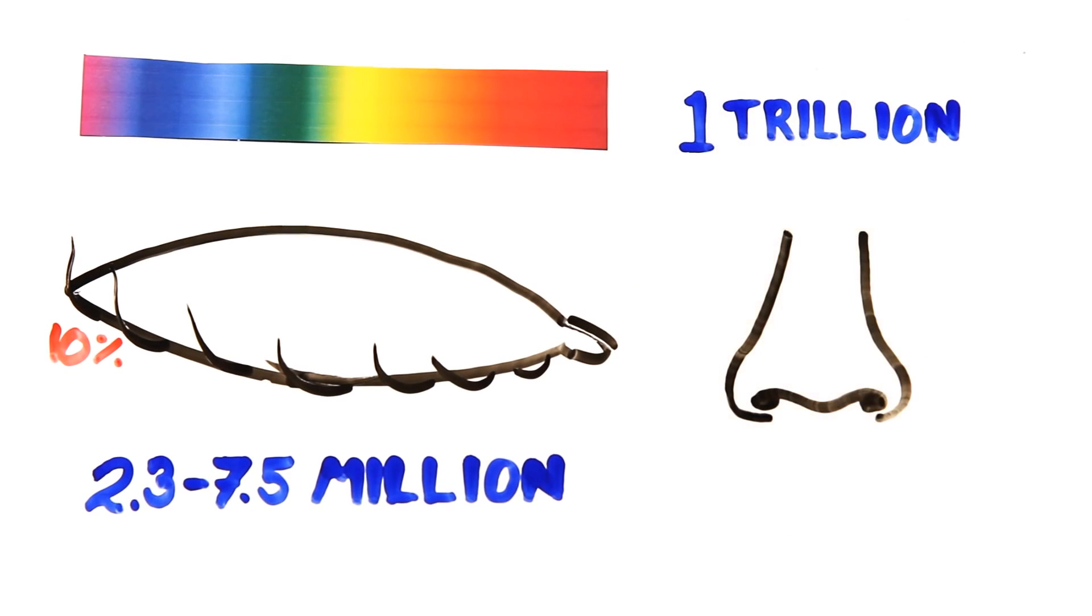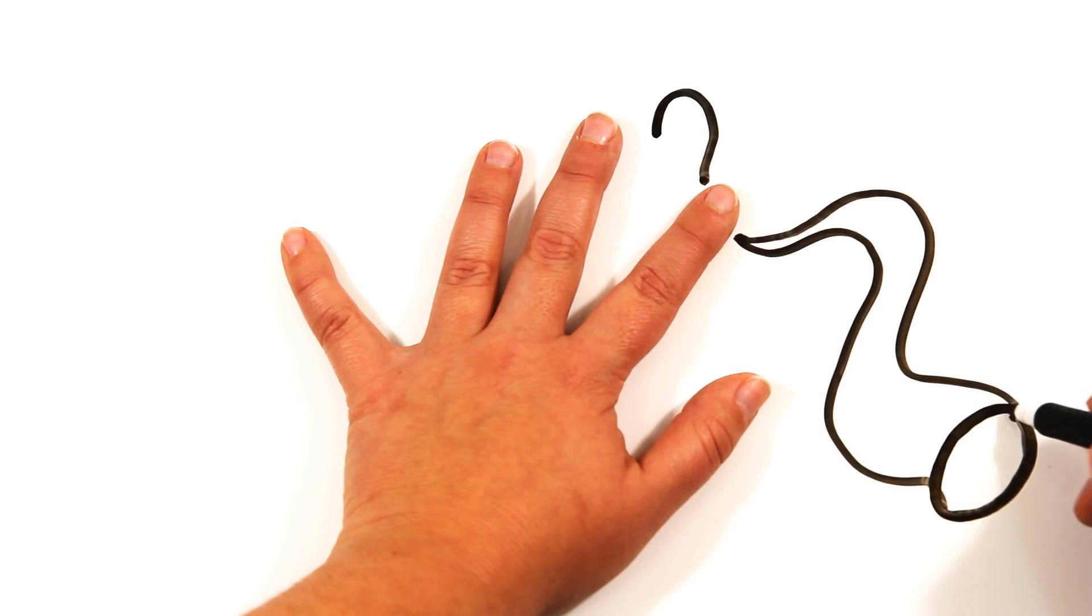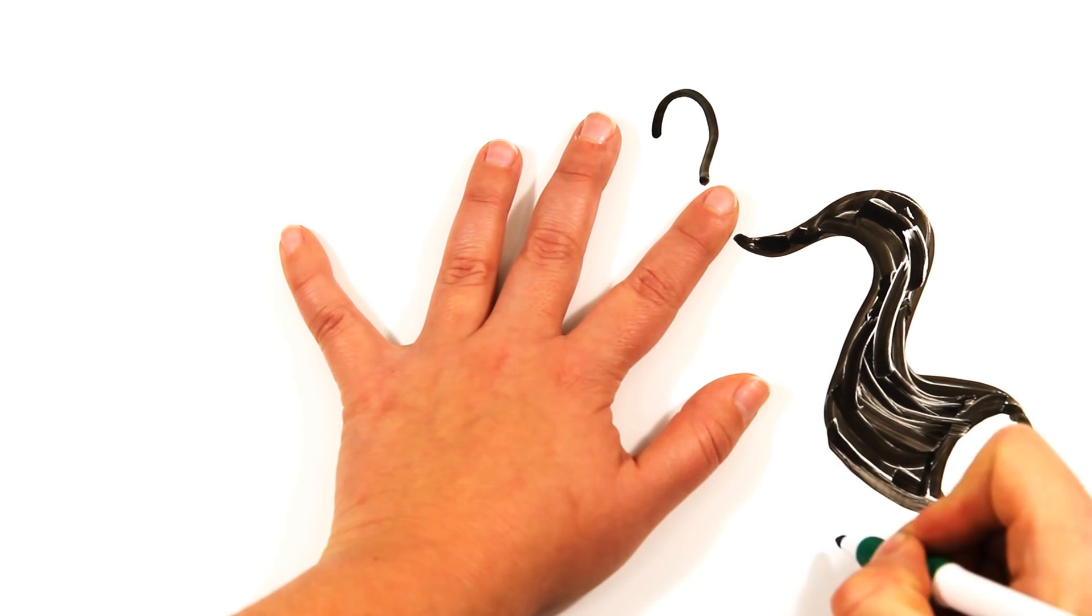Your nose is able to discriminate between 1 trillion different smells, meanwhile your fingers can feel a ridge as small as 13 nanometers in size.